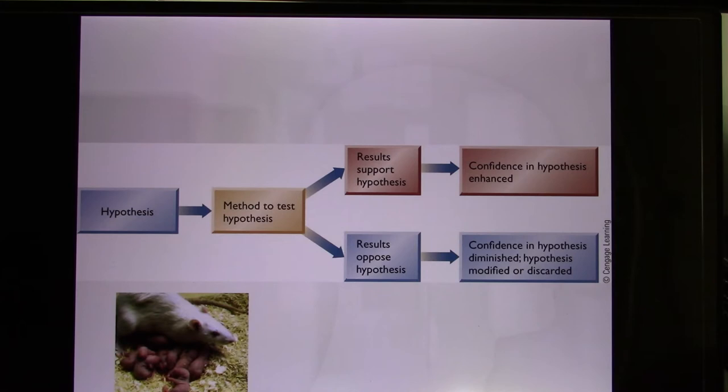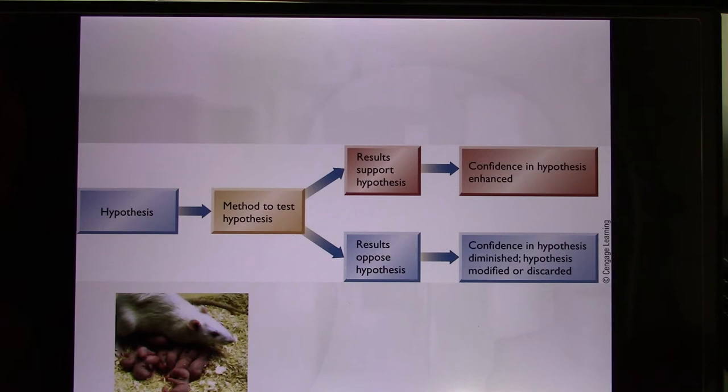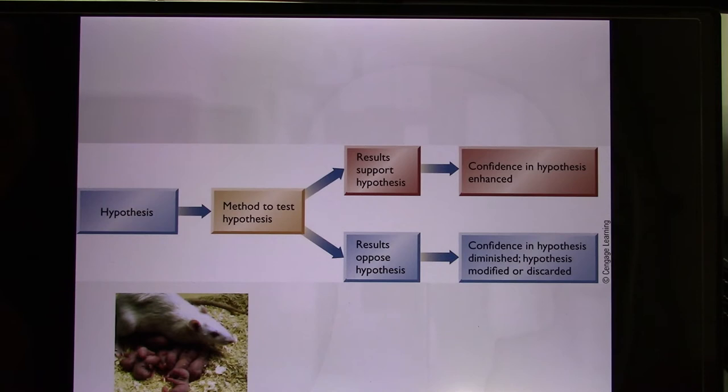Especially if you want to establish the causation effect, you have to do the experiment. In the previous chapter we talked about correlational study — correlational study is just a correlation, so it can create mistakes. If you want to say a causation conclusion, you should not use a causation conclusion by looking at a correlational study.